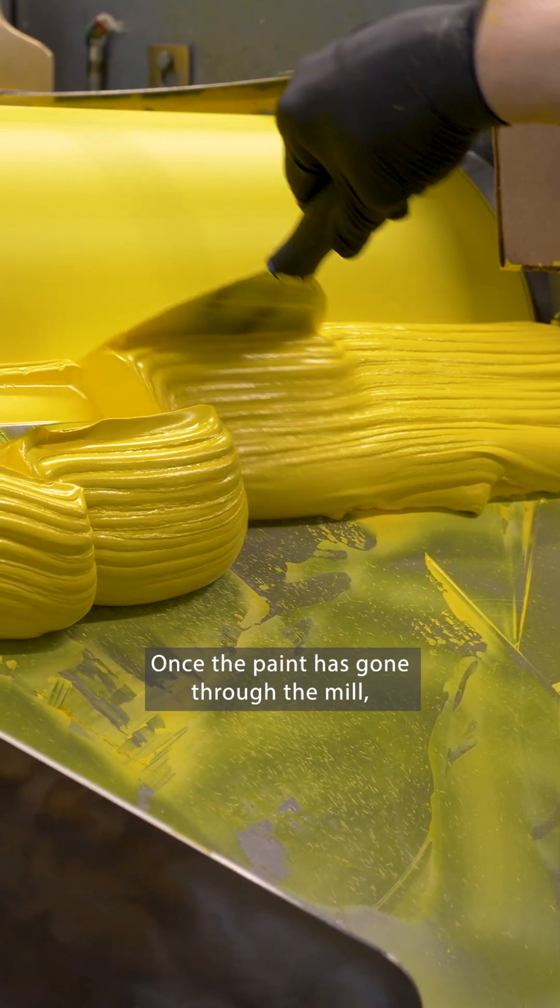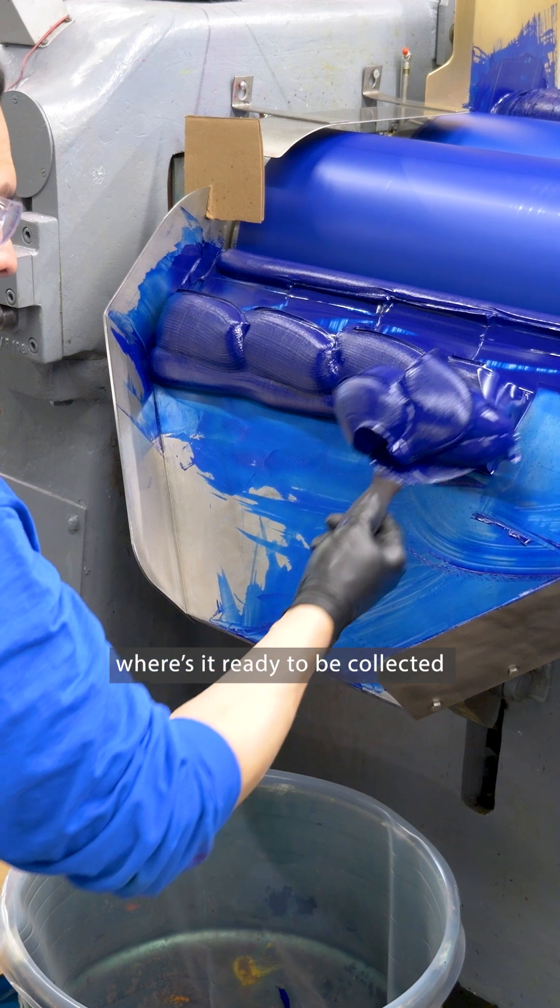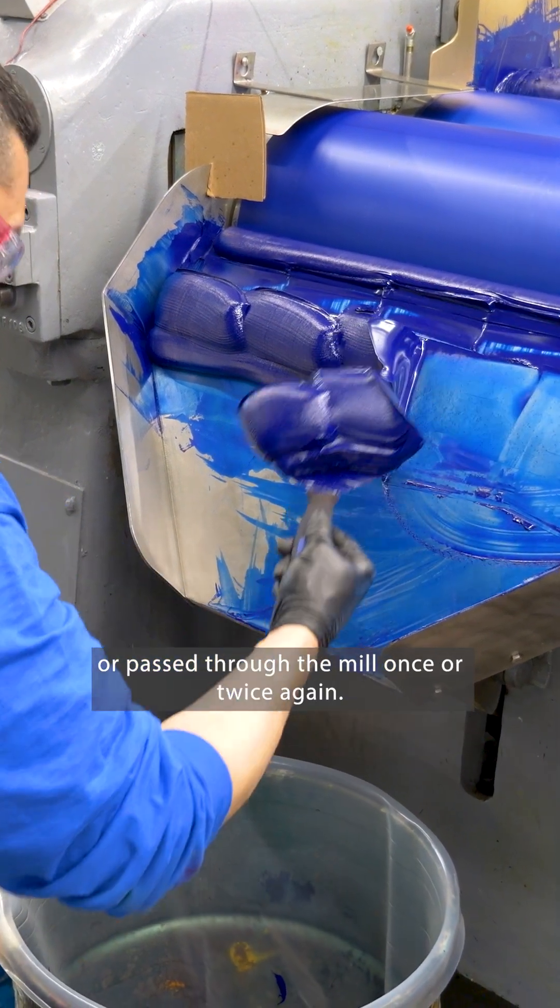Once the paint has gone through the mill, it's gathered at the front along the apron's knife edge, where it's ready to be collected or passed through the mill once or twice again.